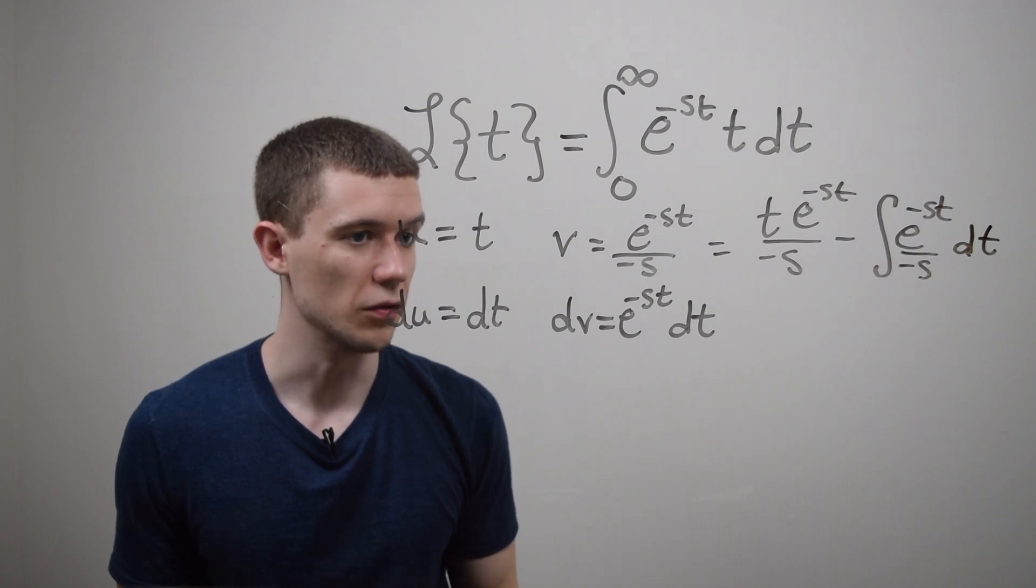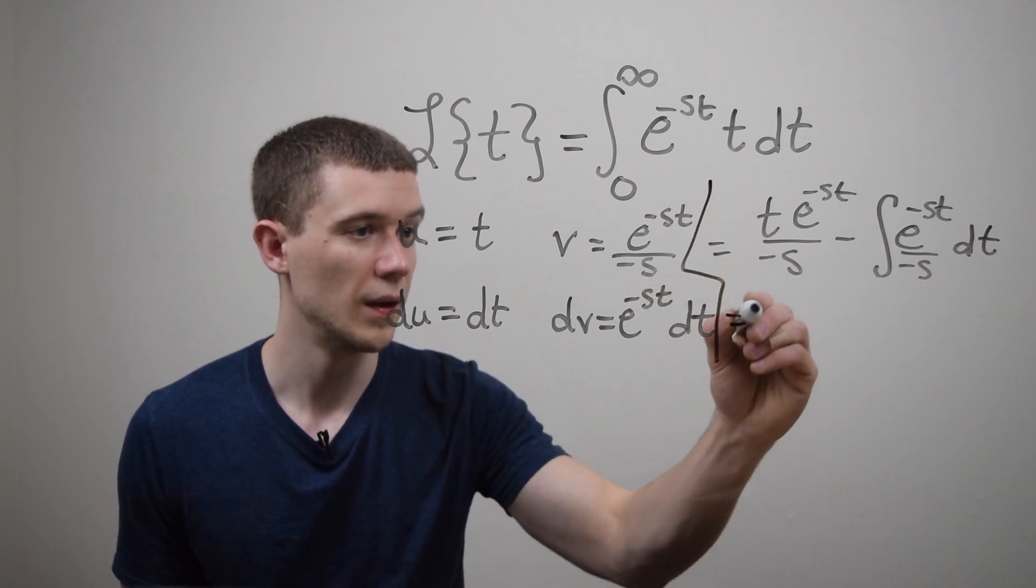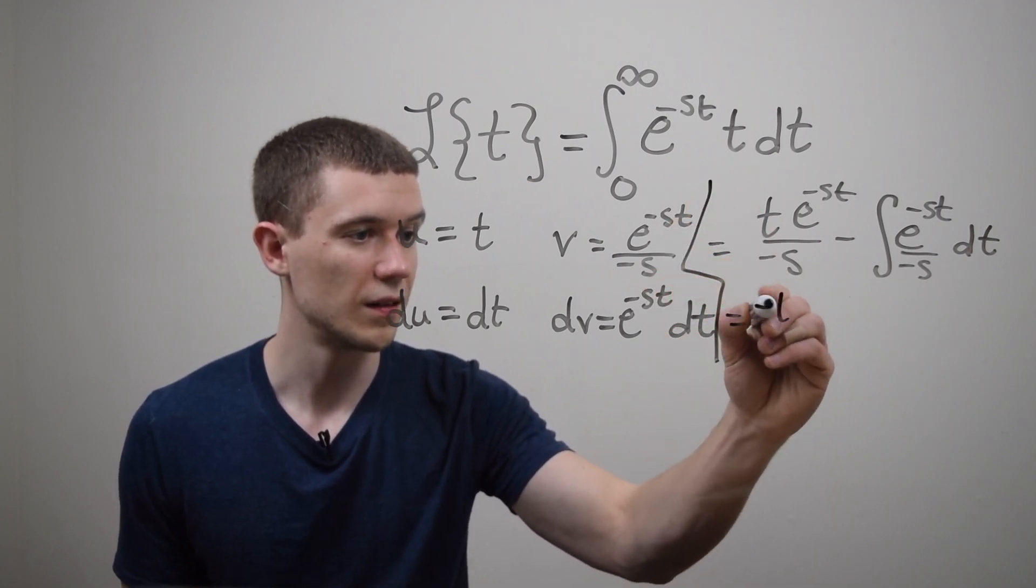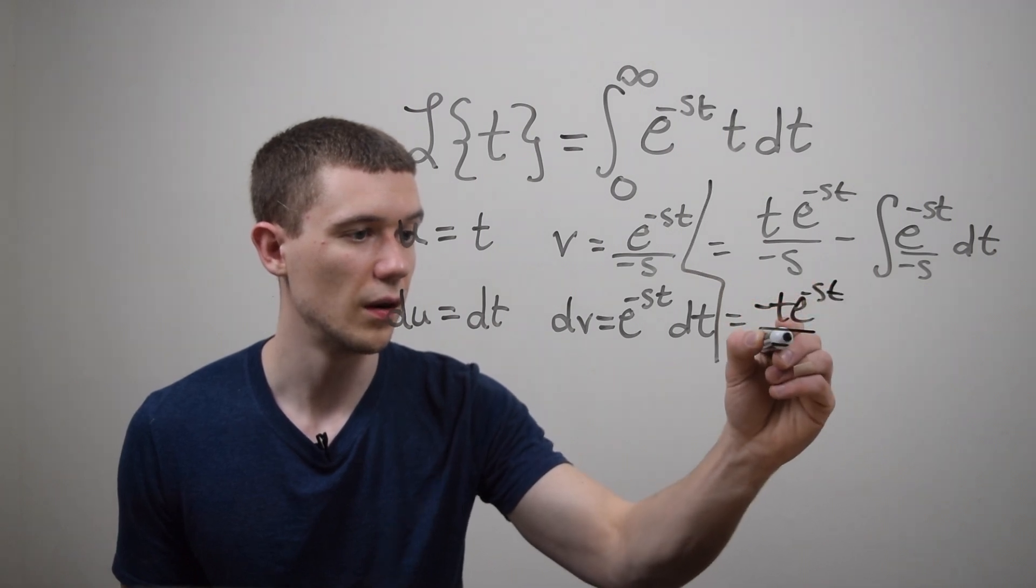And now I just have to do this integration once more. So this is going to be minus t e to the minus st over s.